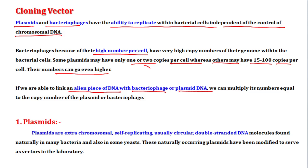When we link our alien DNA to a plasmid or bacteriophage and multiply it inside a host cell, our inserted DNA will multiply. The number of copies will equal the copy number of that plasmid or bacteriophage. So the desired foreign DNA gets replicated to the same copy number.